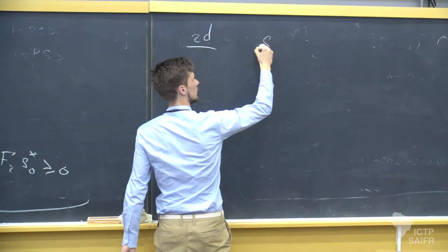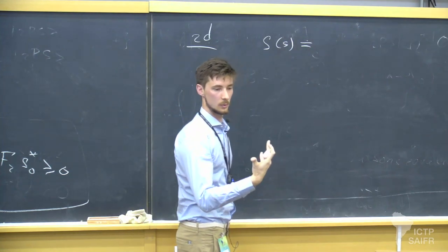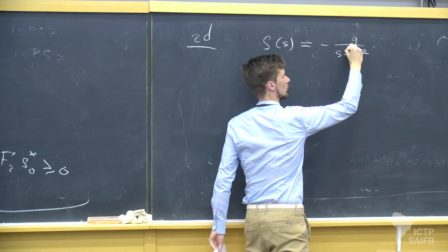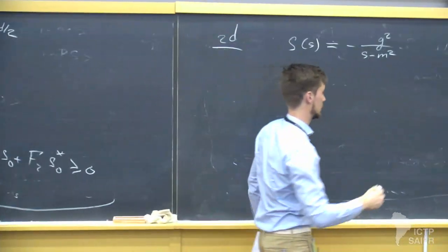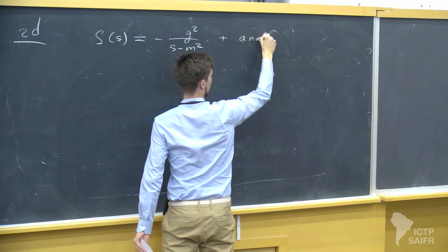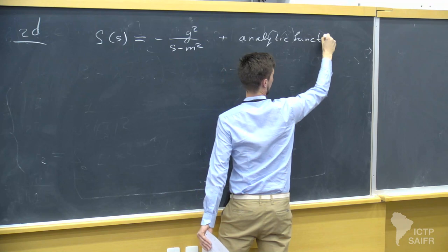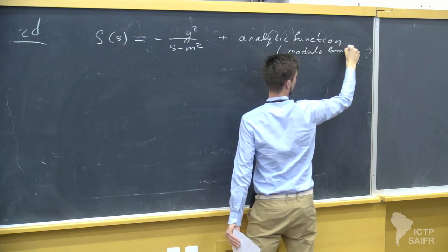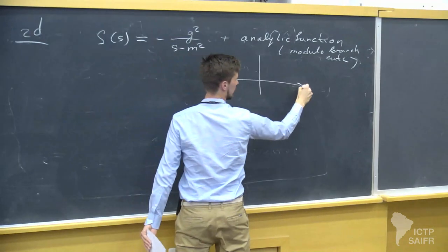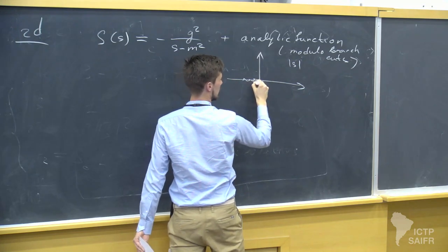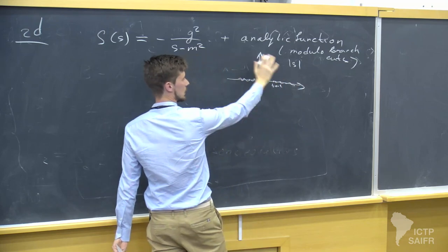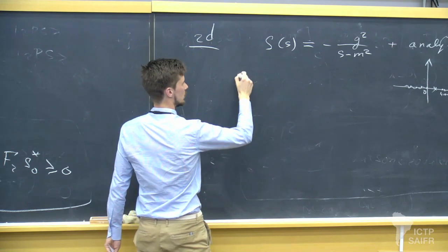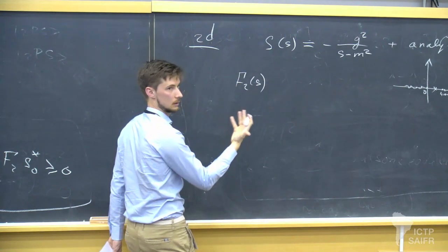Yes — we have very good numerical algorithms which solve linear optimization problems in this form. From now on, I will focus on two dimensions to avoid complications. I can parameterize my scattering amplitude as follows: due to the presence of asymptotic states I have a pole at mass M squared, with residue G squared indicating how strongly the asymptotic states interact. The rest is some analytic function on the complex plane modulo branch cuts. The form factor can be written similarly with the same analytic structure.